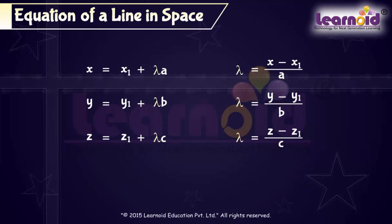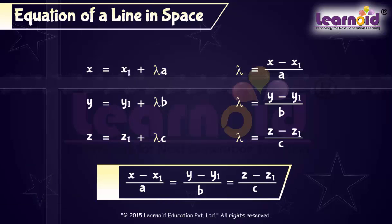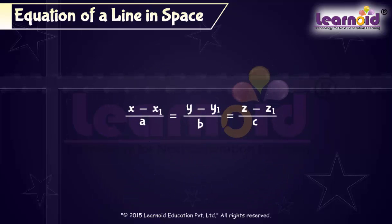These are parametric equations of the line. Eliminating lambda, we can rewrite it as (x minus x1)/a equals (y minus y1)/b equals (z minus z1)/c. This is the Cartesian equation of the line.